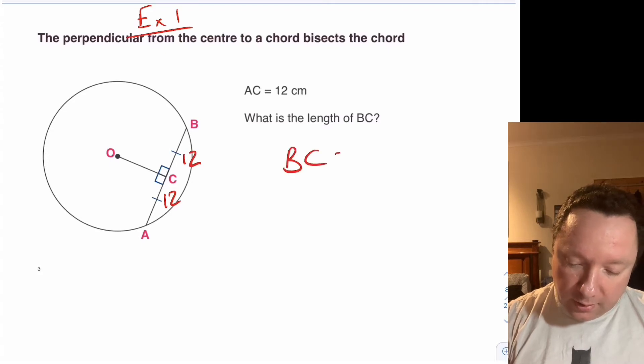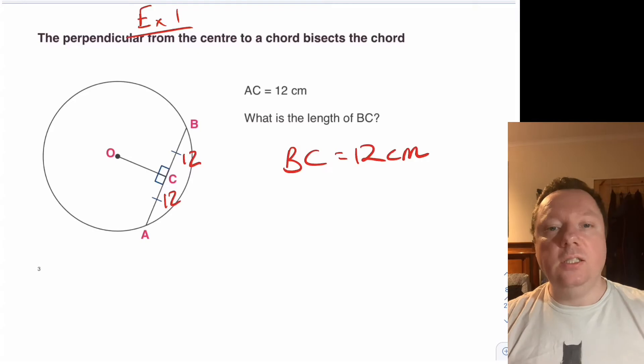Well we've got it already telling us it's in half so it's just really identifying that this is also 12. So BC is equal to 12 centimetres. Doesn't get much easier than that.